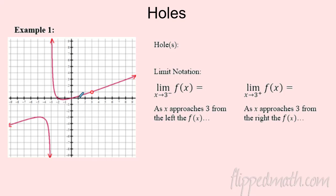Right there is that circle — so it looks like when x is 3, we've got a problem with the graph. We've got this hole, and we're going to define this with limit notation. As I approach 3 from the left, following the graph, I'm approaching 1. As I approach 3 from the right side, I'm also approaching 1. We're back to one-sided limits — last time we looked at vertical asymptotes, this time we're looking at holes.